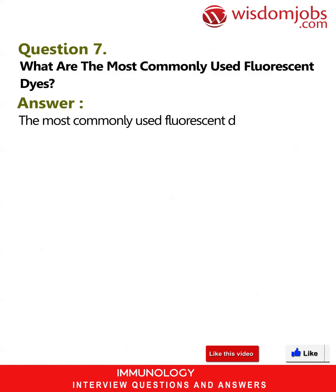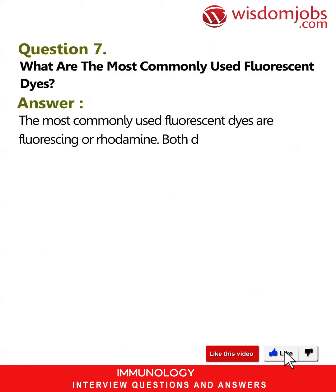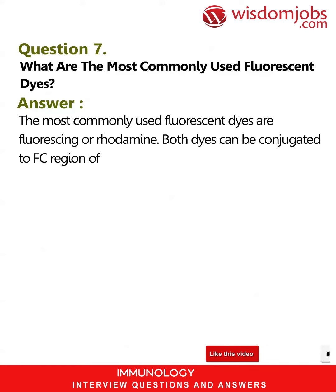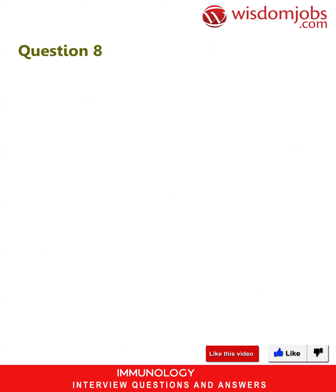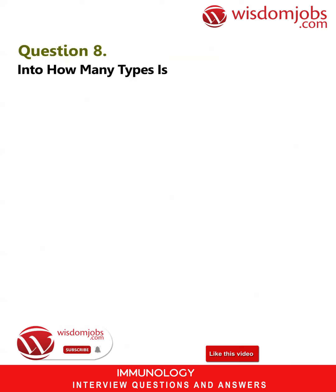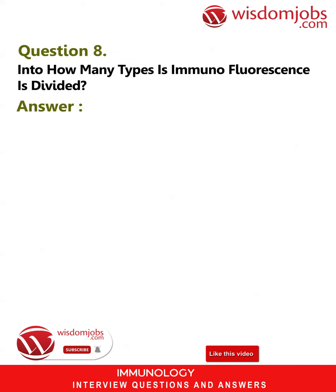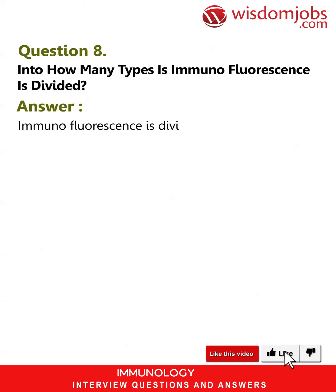Answer: The dyes are fluorescein and rhodamine. Both dyes can be conjugated to the Fc region of the antibody without affecting the specificity of the antigen. Question 8: Into how many types is immunofluorescence divided? Answer: Immunofluorescence is divided into two types: direct immunofluorescence and indirect immunofluorescence.